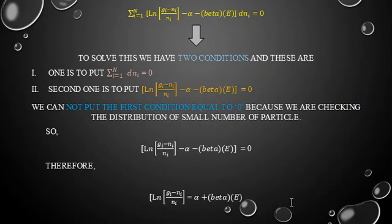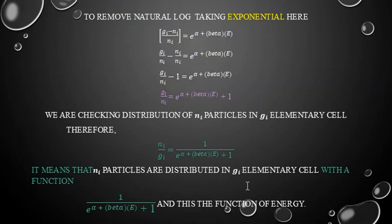We have two ways to satisfy this: set dnᵢ = 0, or set the bracket term equal to zero. Since we are examining the distribution of a small number of particles, we cannot set dnᵢ = 0. So we set: ln((gᵢ - nᵢ)/nᵢ) - α - β·εᵢ = 0. Rearranging: ln((gᵢ - nᵢ)/nᵢ) = α + β·εᵢ. Removing the natural log by taking exponentials on both sides: (gᵢ - nᵢ)/nᵢ = e^(α + β·εᵢ).